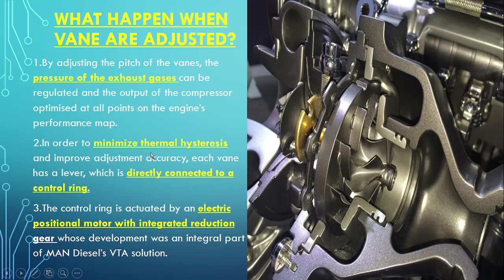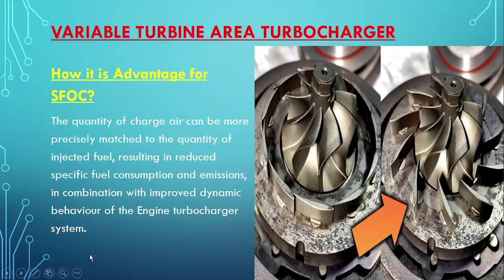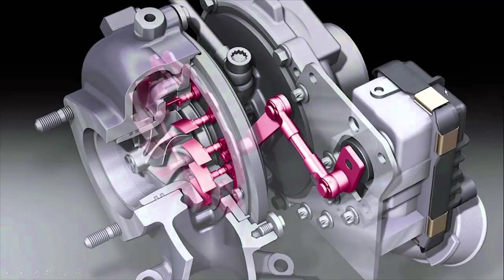In order to minimize thermal hysteresis and improve adjustment accuracy, each vane has a lever which is directly connected to a control ring. The control ring is actuated by an electric position motor with an integrated reduction gear — whose development was an integral part of MAN Diesel's VTA solution. The control box contains a servo motor which, based on the signal received, gives a signal to the control rod; the control rod varies the control ring, which adjusts the individual vanes, and based on that the impingement on the turbine blade is varied.